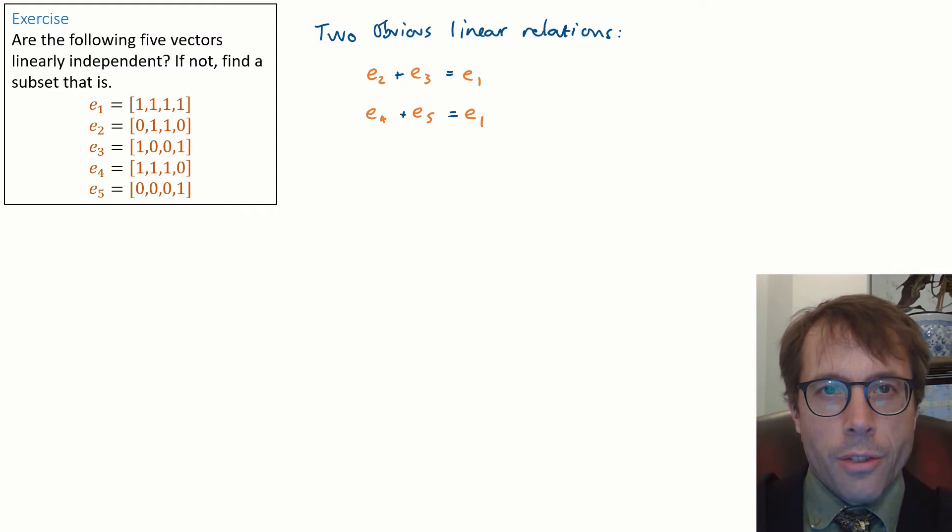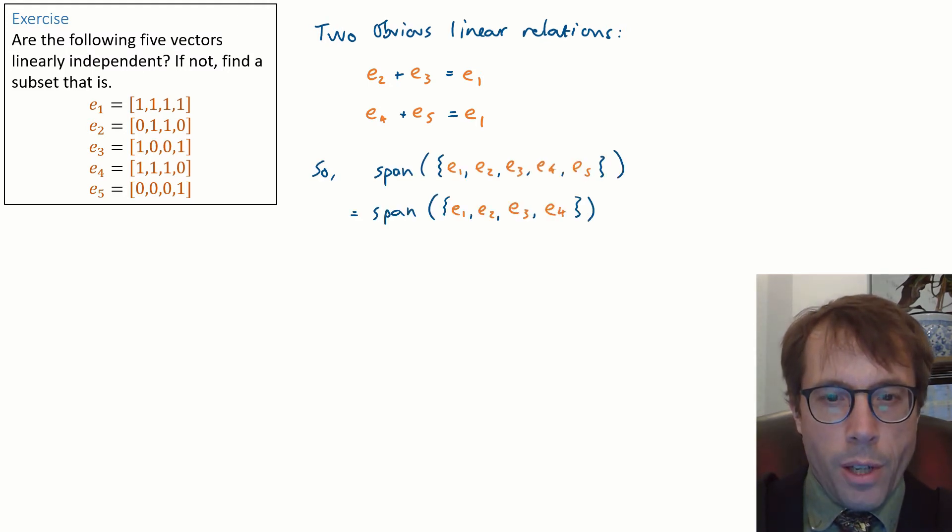So just taking this last equation we could write e5 as a linear combination of e1 and e4, and thus the span of e1 up to e5 must be the same as the span of e1 up to e4. The e5 is redundant.